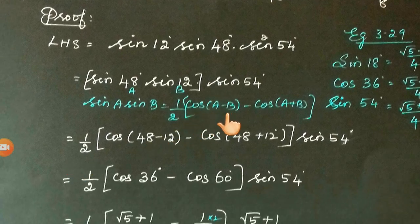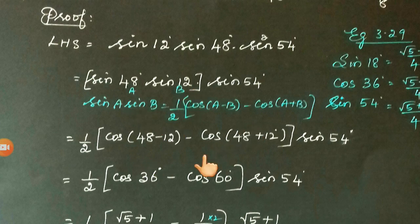1/2 of cos(A - B), that is cos(48 - 12), minus cos(A + B), that is cos(48 + 12), times sin 54°. This equals 1/2[cos 36° - cos 60°] × sin 54°.